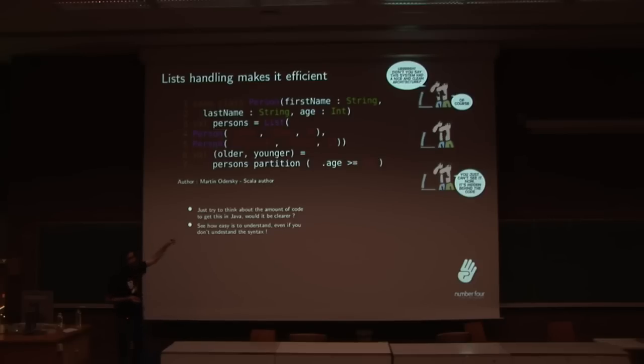And then I'm going to create two new lists, older or younger. Those two new lists are going to be partitioned from the person list. And I'm going to pass to the partition method a function. This is a function, the thing here. So the underscore dot age, superior or equal to 18, is a function. And the partition method is going to use this function to actually create two sublists. One will be younger, one will be older.